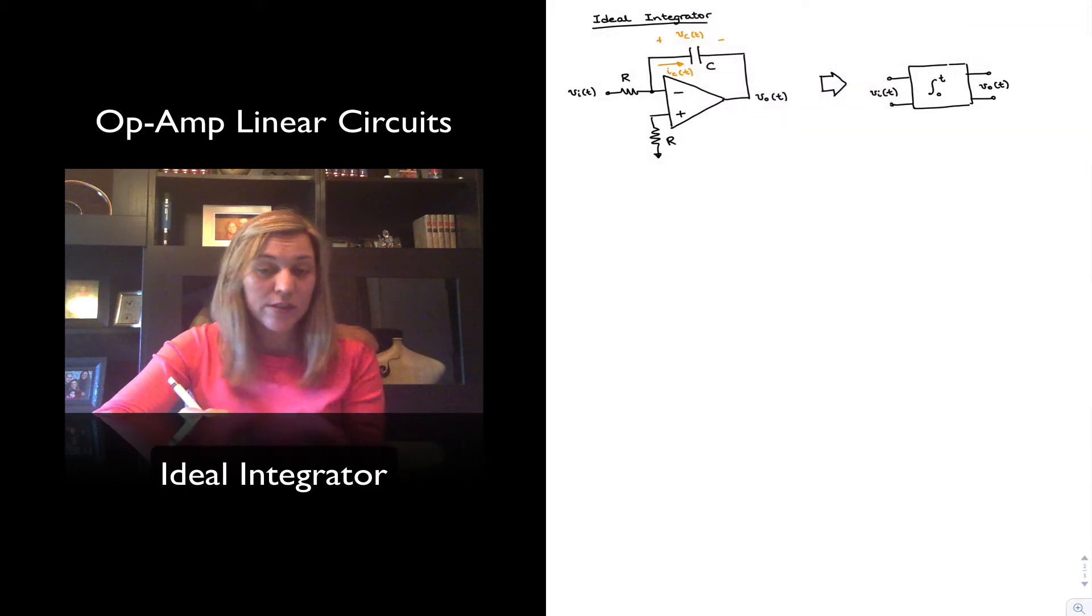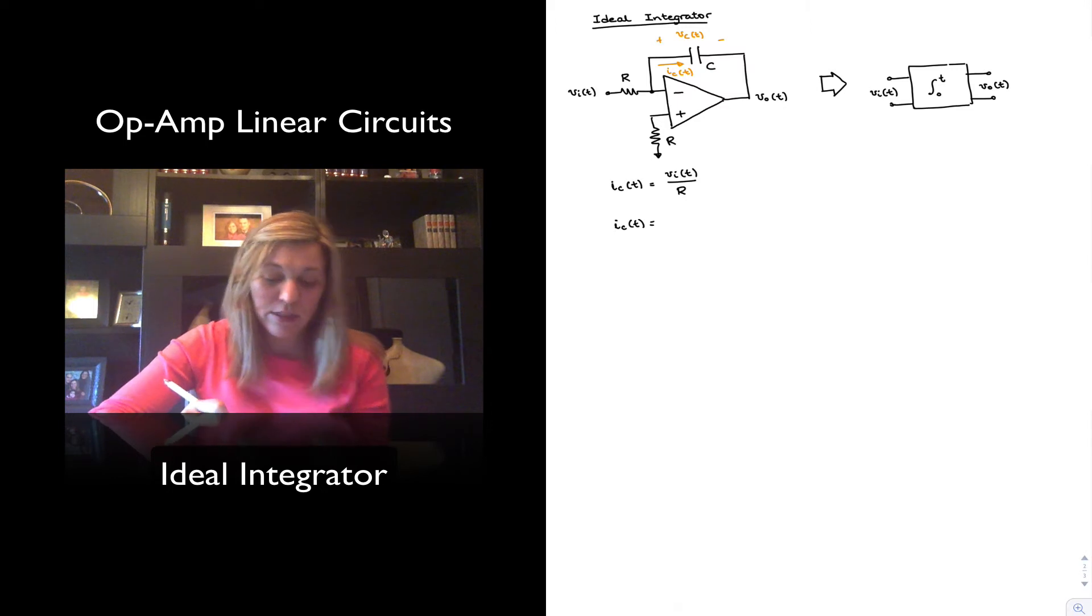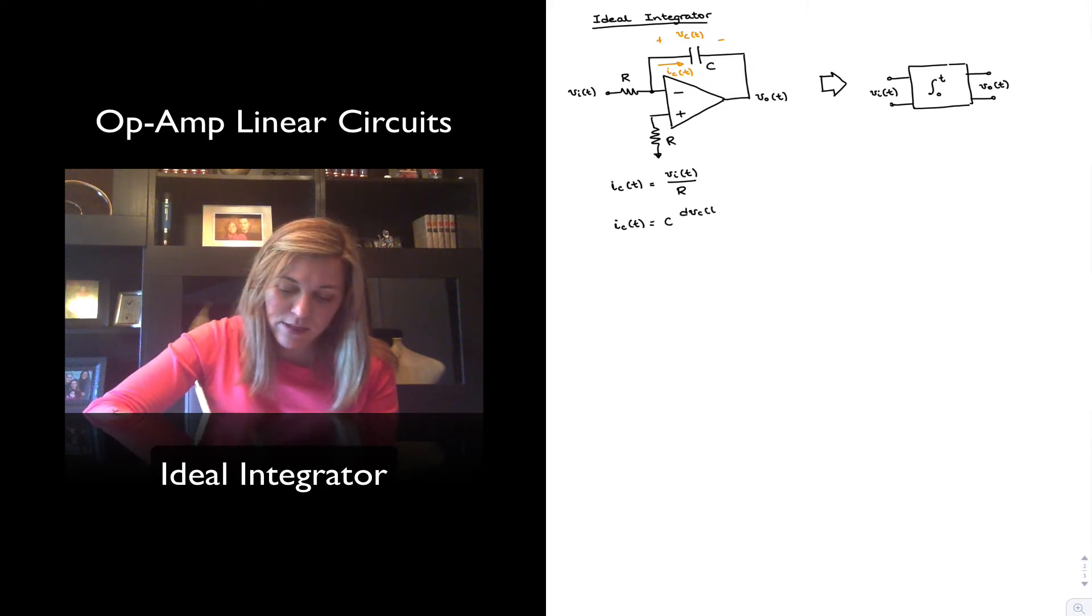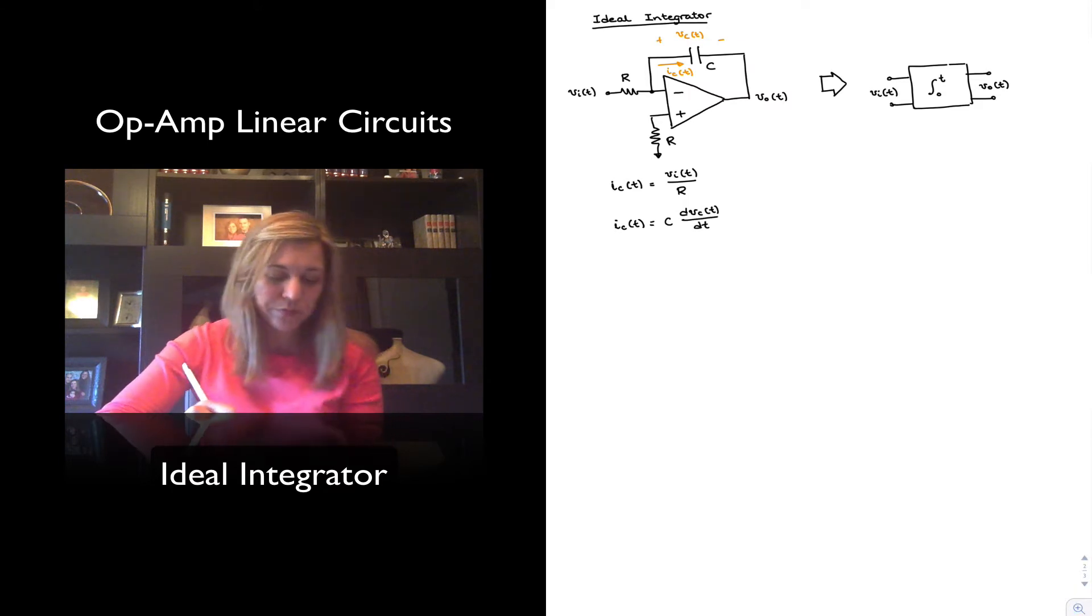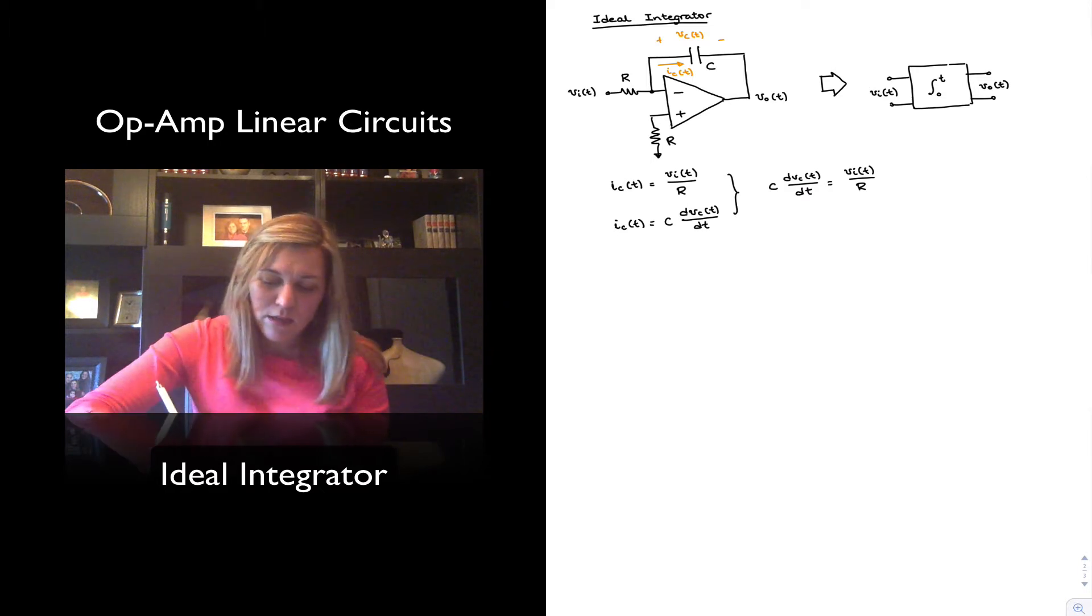Now there are two ways that we can express the value of IC of t. One, we can express it in terms of the resistor R, so it's the voltage across the resistor, which is Vin divided by R, since the voltage on the other end of the resistor is zero. Or we can express it in terms of the capacitor, and in that case it will be C dVc as a function of time dt. The two expressions for the current should be equal to each other, and so we can equate them, and we can say C dVc of t dt is equal to Vi of t divided by R, and I can solve this equation for dVc of t, and I will have that this equal to 1 over RC Vi as a function of time dt.